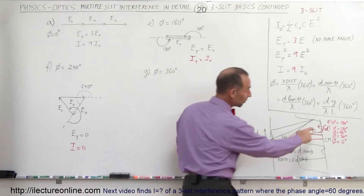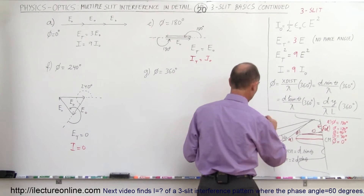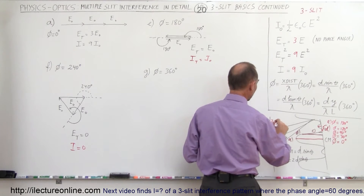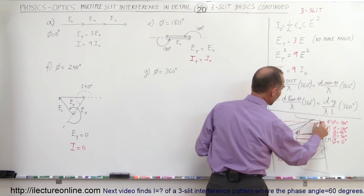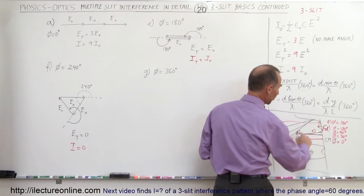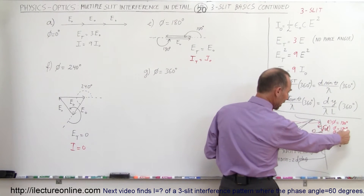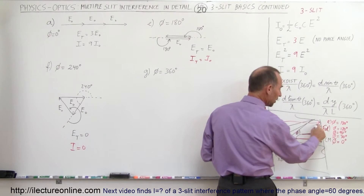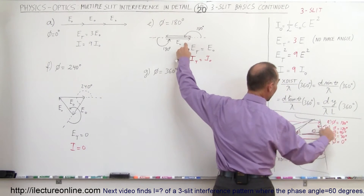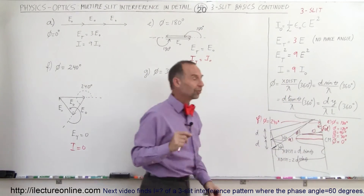So in case F, when the phase angle equals 240 degrees, we end up with another minimum. That's why we have that small maximum: we have a large central maximum that drops to zero at the 120 degree phase shift, then a small maximum at the 180 degree phase shift, then back to zero — a minimum at 240 degrees.